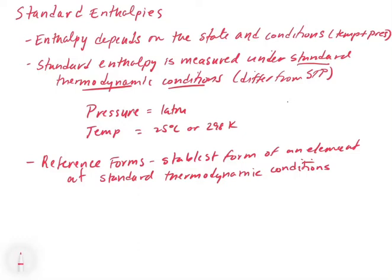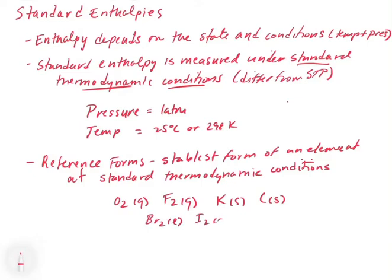The stablest form of an element under thermodynamic conditions is what we call a reference form. The reason why standard thermodynamic conditions is what it is, is because it's what we're used to — we live at 1 atmosphere and room temperature, which is about 25 degrees Celsius. For example, oxygen would be oxygen gas, fluorine would be fluorine gas, potassium would be potassium solid, carbon would be carbon solid, bromine would be bromine liquid, and iodine would be iodine solid. These are the elements as we know them around us.